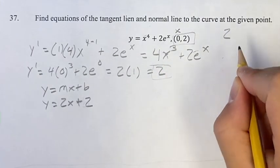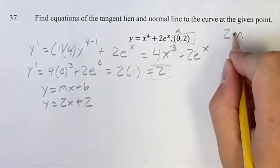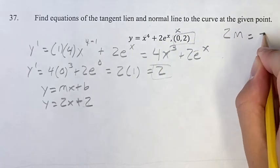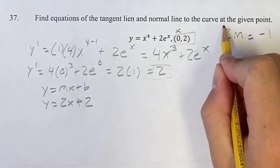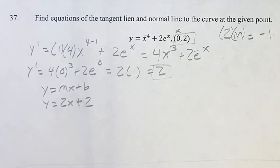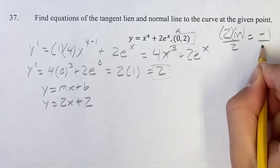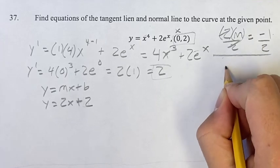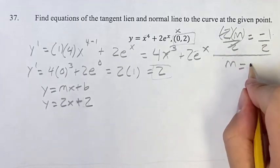So 2 times m, whatever the slope of this normal line is, is going to equal negative 1. So these two multiplied by each other is negative 1. That means they're negative reciprocals. Now we can solve for m. If you divide both sides by 2, the 2's cancel. We get the slope of this normal line is negative 1 half.